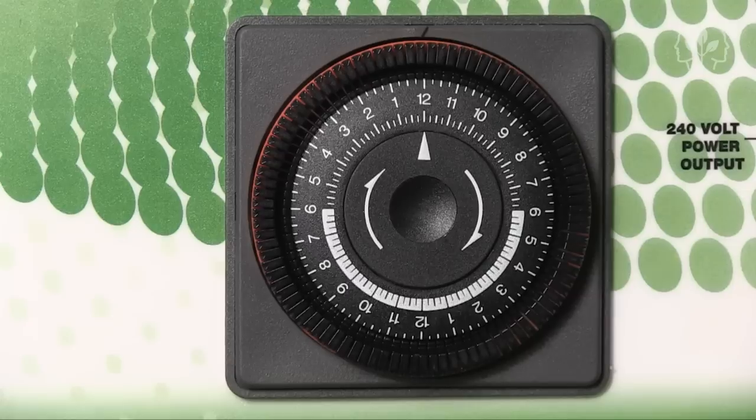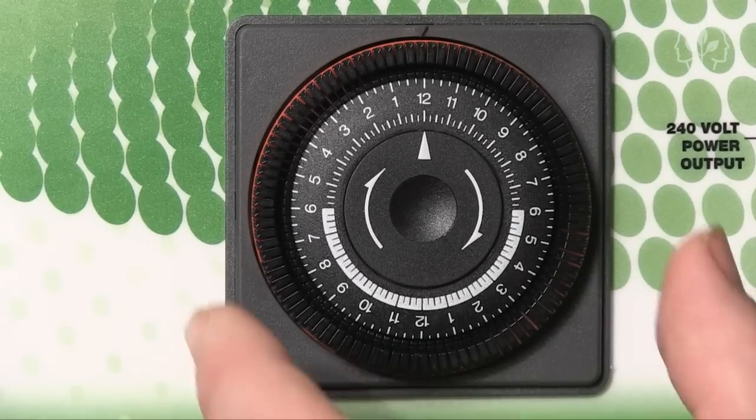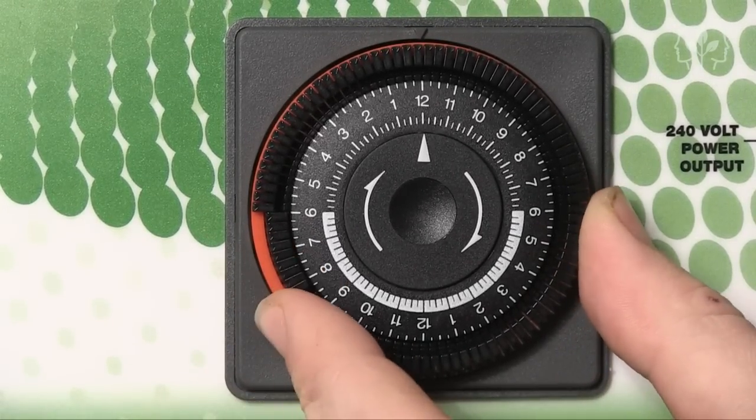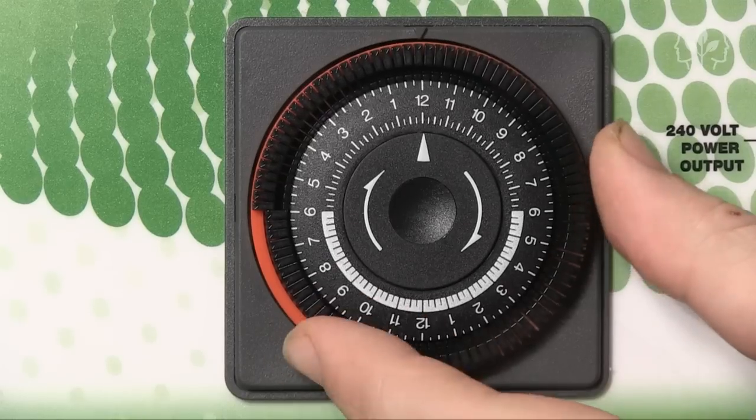Now, if you notice, the built-in segmental timer works in increments of 15 minutes. You simply press these time trippers down for when you want your lights on, and leave them up for when you want your lights off.